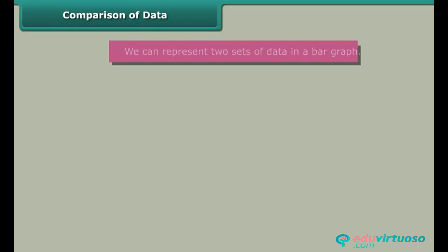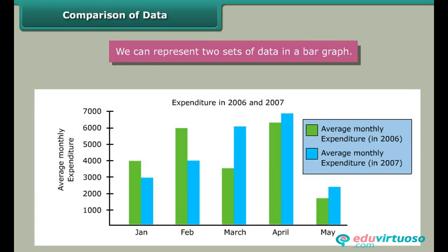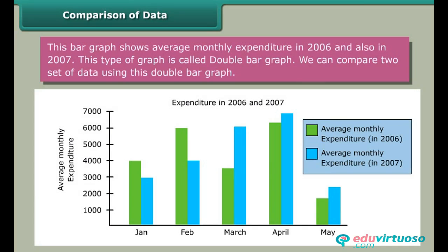Comparison of data: We can represent two sets of data in a bar graph. This bar graph shows average monthly expenditure in 2006 and also in 2007. This type of graph is called a double bar graph.